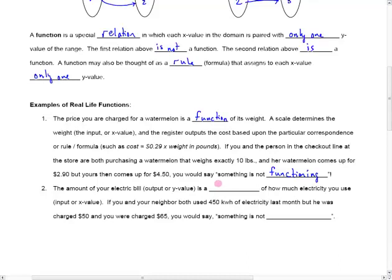The amount of your electric bill is a function of how much electricity that you use. So suppose that you and your neighbor both use 450 kilowatt hours of electricity, and that would be the input. That would be your x value. And suppose your neighbor gets charged $50 for that much electricity, but you got charged $65.